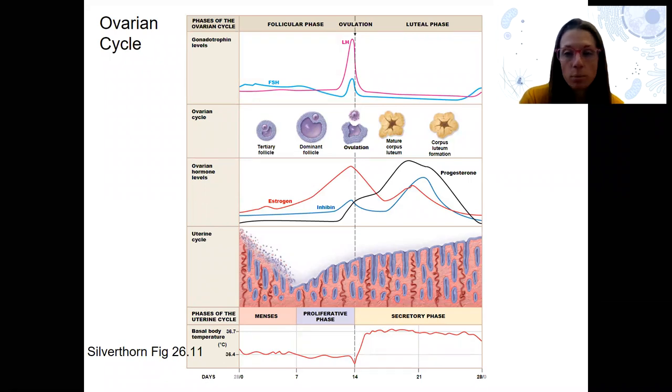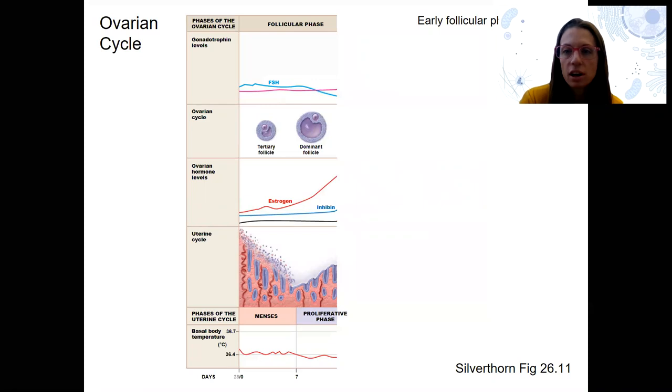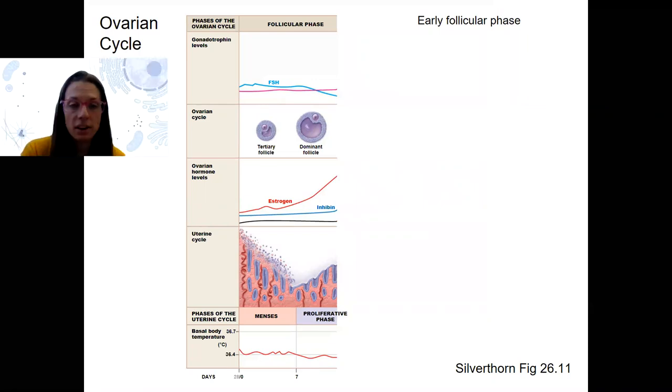We've seen this figure before. We know about these changes throughout the 28 days in humans of the ovarian cycle. We're going to go through each one of these phases: follicular, ovulation, and luteal phase, and look at the HPG axis function at each of these phases.